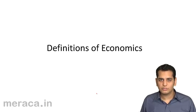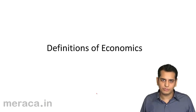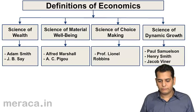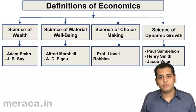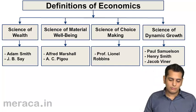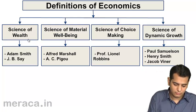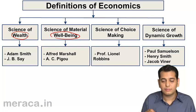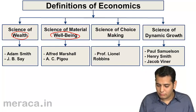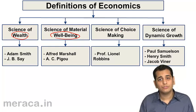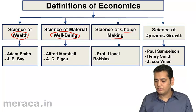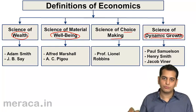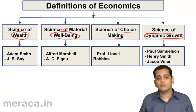Till now we have studied what is economics and what is micro and macroeconomics. Now we will see how economics has been defined by eminent economists. Many economists have tried to define economics. Some have defined it as a science of wealth, others as a science of material well-being, others as a science of choice making, and finally some have defined economics as a science of dynamic growth.